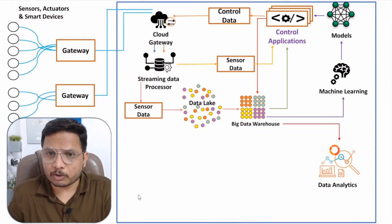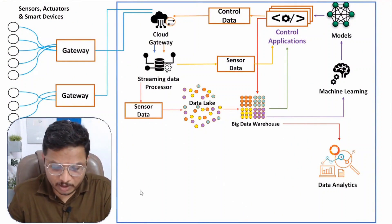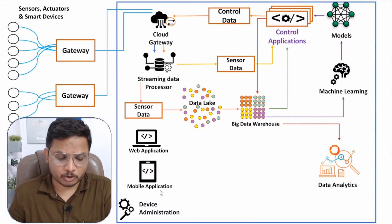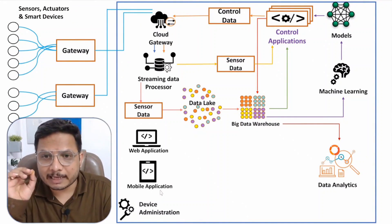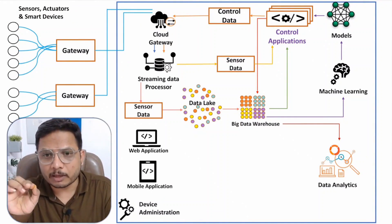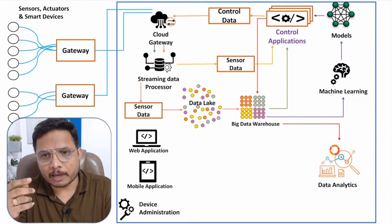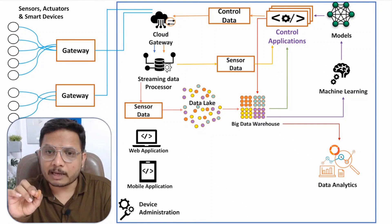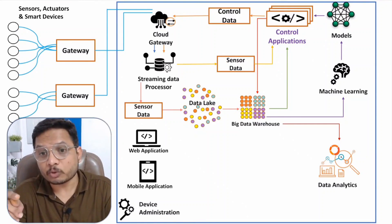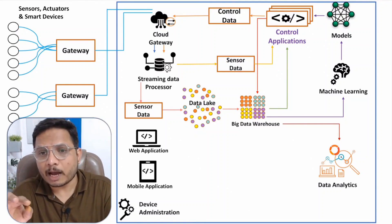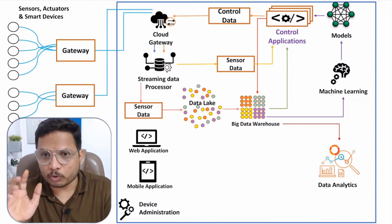The next block is device administration. We have a device administration block which can include a web application or a mobile application. Here you can easily perform user login or network admin login with device administration. With device administration, one can have manual control of the application or it can also be automated control. It depends on the user or admin how the control of the application is given.